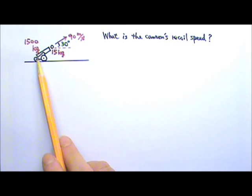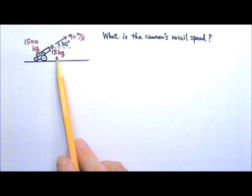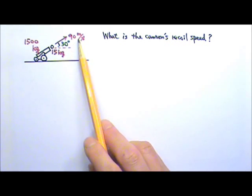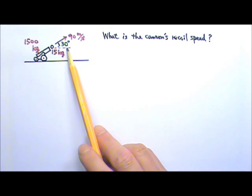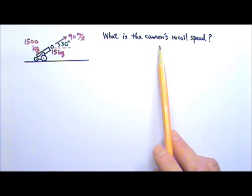A 15 kg cannon is used to shoot a 15 kg cannonball. If the cannonball is shot at 90 meters per second, 30 degrees above the horizontal, what is the cannon's recoil speed?